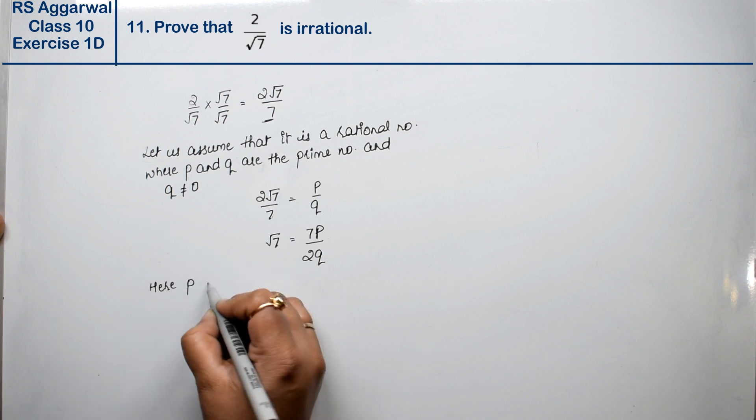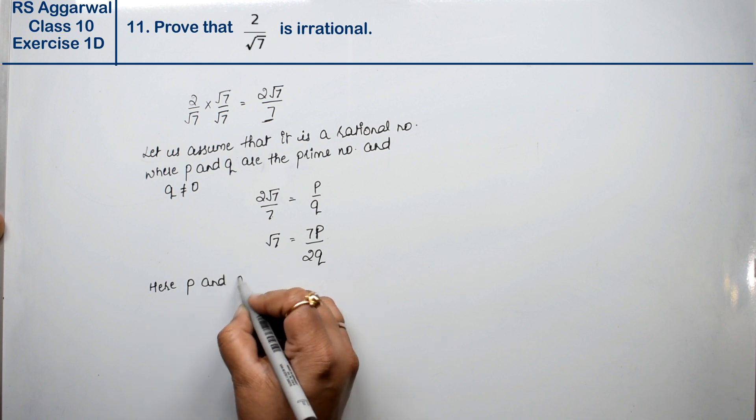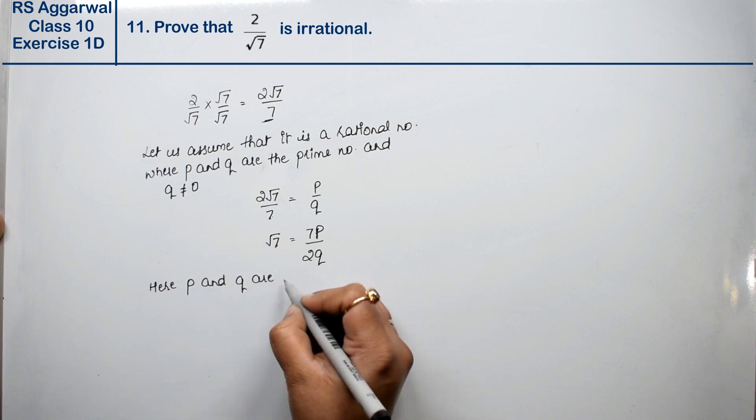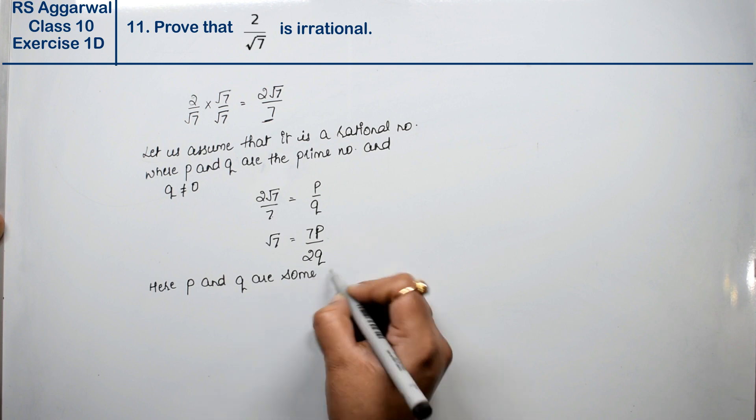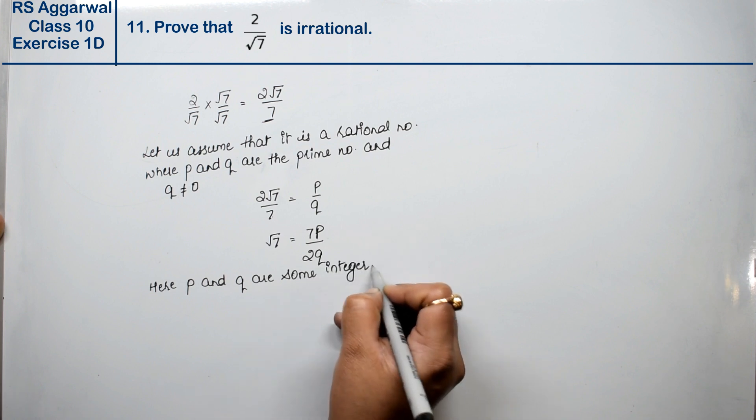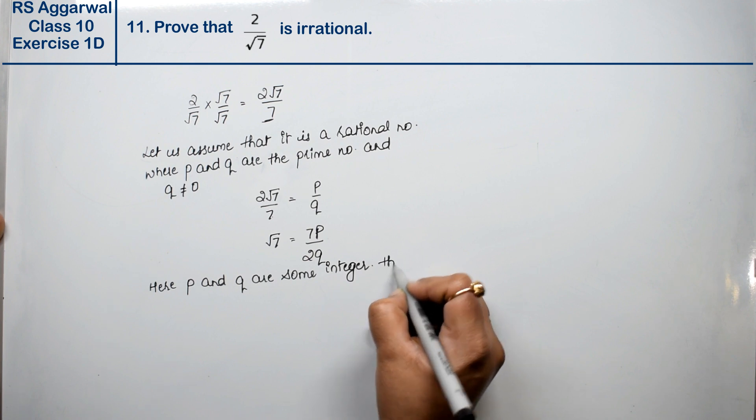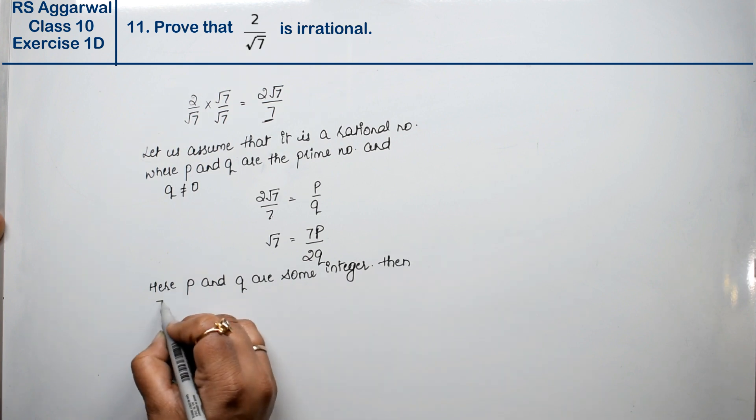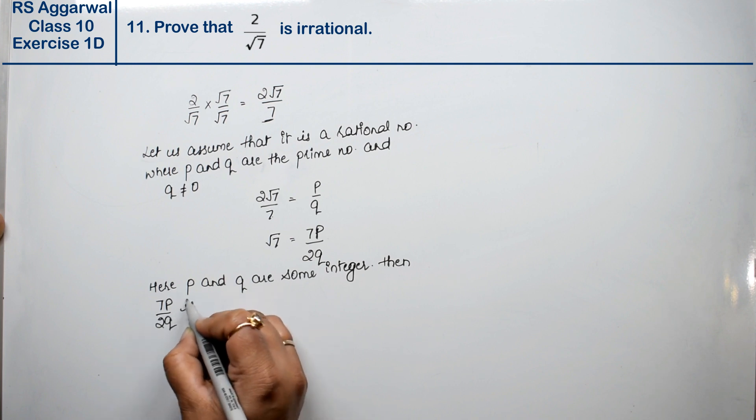Now, p and q are some integers. Then 7p upon 2q is rational.